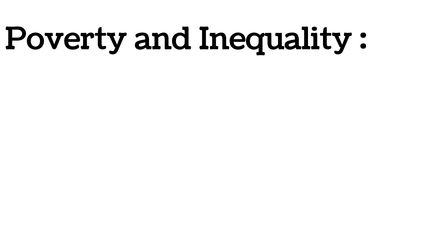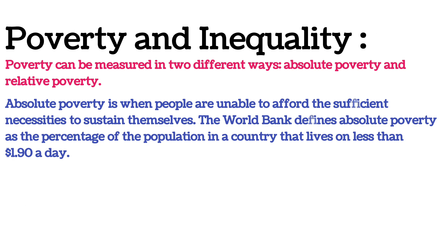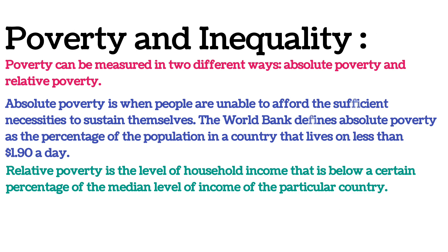Poverty को दो अलग-अलग तरीकों से नापा जा सकता है: Absolute Poverty और Relative Poverty. Absolute Poverty तब होती है जब लोग खुद को बनाए रखने के लिए पर्याप्त आवश्यकताएं हासिल करने में सफल नहीं होते हैं. World Bank Absolute Poverty को उस Population के परसेंट के रूप में define करता है जो प्रतिदिन $1.90 से कम पर जीते हैं. Relative Poverty, Household Income का वह level है जो किसी विशेष देश की income के average level के एक certain percentage से नीचे है.